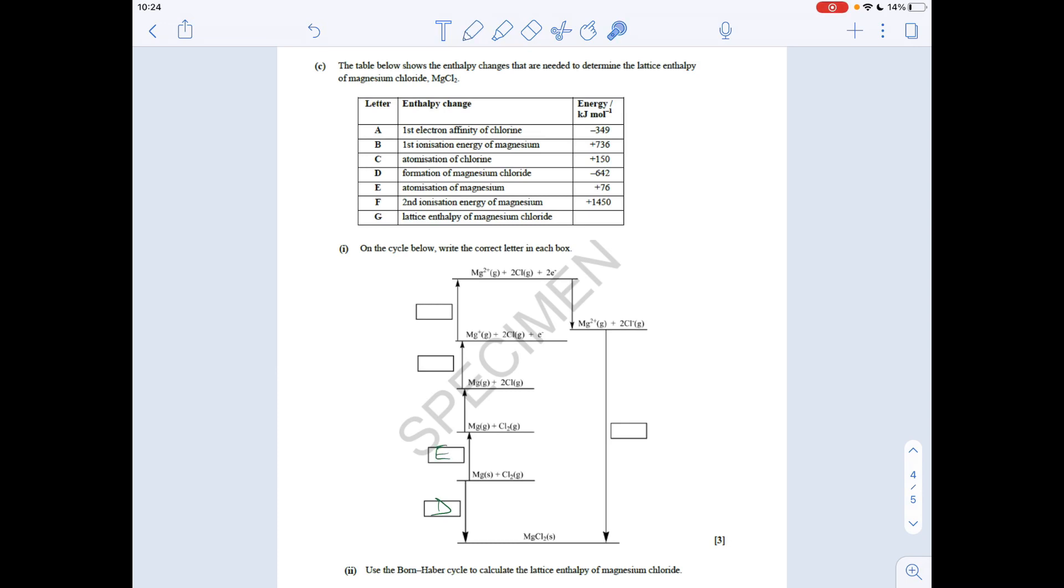The next one is this one here. So that is going from Mg gas to Mg1+ gas. So that's its first ionisation energy of magnesium. So that's B. And obviously the next one up is going from Mg1+ gas to Mg2+ gas. That's the second ionisation energy of magnesium. So that's F. And then the final one - we've gone from gaseous ions to the lattice. That's the lattice enthalpy. So that's obviously G.